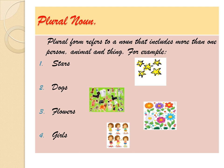In singular there was only one star, but here there are many stars. That's why it is a plural noun. Stars, dogs, flowers, girls.